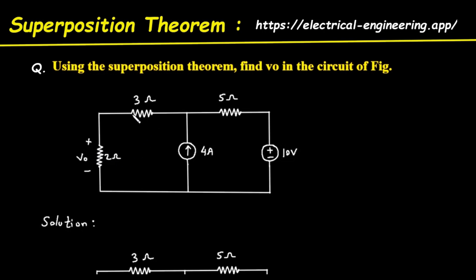This 2 ohm resistor is in series with a 3 ohm resistor. In the middle of the circuit, there is a 4 ampere current source with the arrow pointing upwards. To the right, there is a 5 ohm resistor in series with a 10 volt voltage source, with its positive terminal at the top.